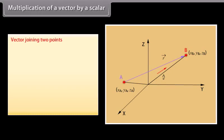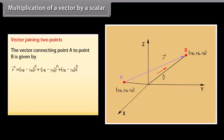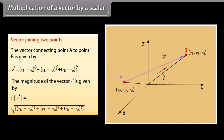Vector joining two points: The vector connecting point A to point B is given by vector R = (XB − XA) cap I + (YB − YA) cap J + (ZB − ZA) cap K. The magnitude of this vector is |R| = √((XB − XA)² + (YB − YA)² + (ZB − ZA)²).